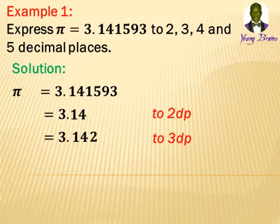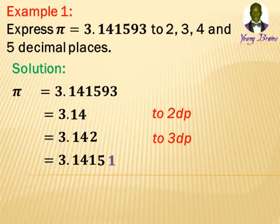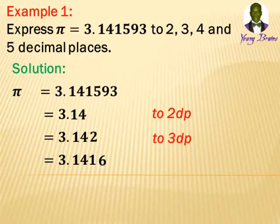Next is to 4 decimal places. We write the number as 3.14159. At that point we already have 4 numbers after the decimal. But the fifth number is 9, which is greater than 5, so we approximate it to 1 and add it to the last digit which is 5, giving us 6. So to 4 decimal places the answer is 3.1416.